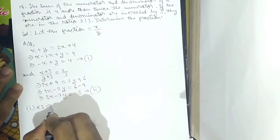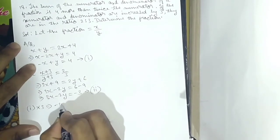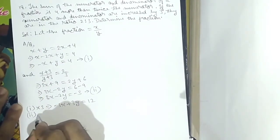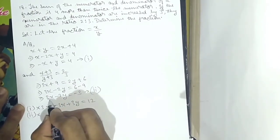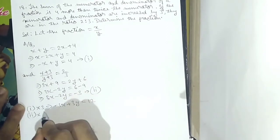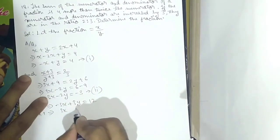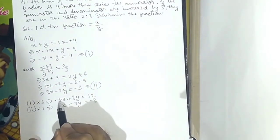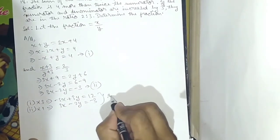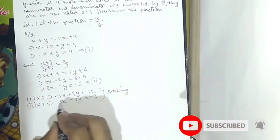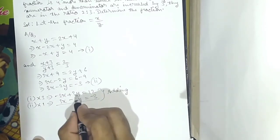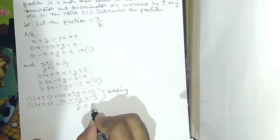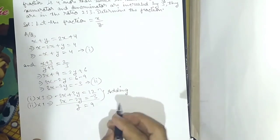Multiplying equation 1 by 3: minus 3x plus 3y equals 12. Multiplying equation 2 by 1: 3x minus 2y equals minus 3. Adding both equations: minus 3x plus 3x cancels to 0, and 3y minus 2y gives 1y, equal to 12 minus 3, which is 9. So y equals 9.